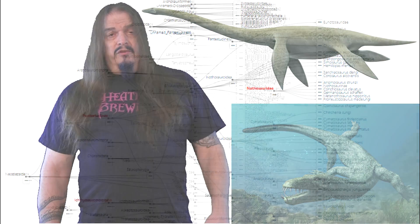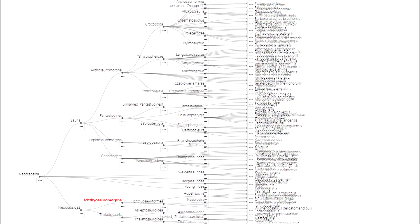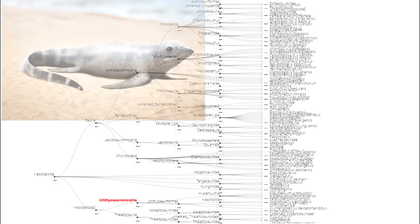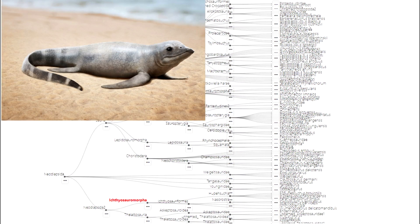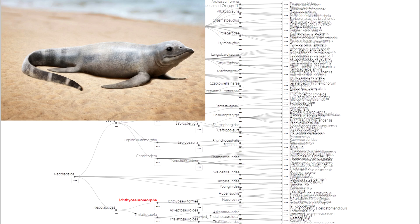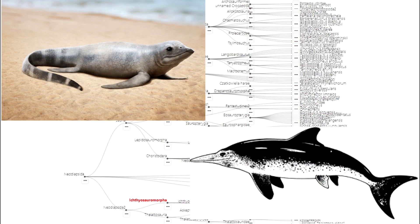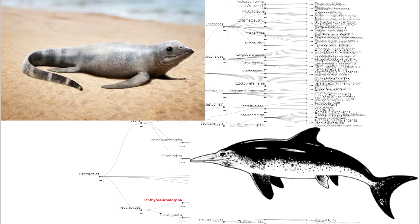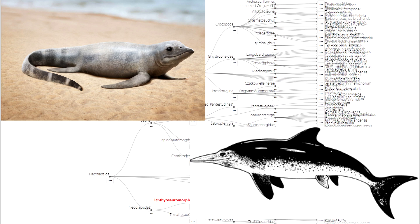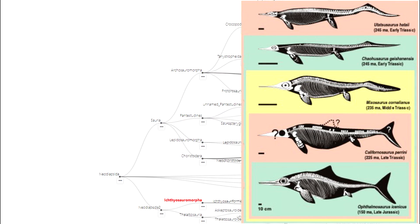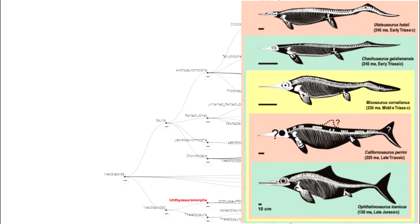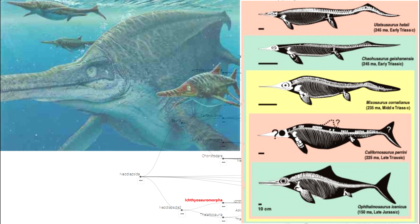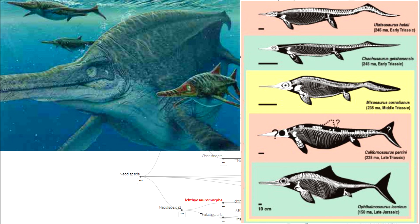We also see another transitional species in Cartorhynchus, the earliest ichthyosaur ever yet discovered. This little four-flippered reptile had flexible wrists, meaning it could hobble about on land like a seal. Descendant species, however, were more like dolphins — obligate swimmers with rigid wrists, unable to move around on land at all. Over time they developed a crook in their tails that turned into flukes, they eventually sported a dorsal fin too, and some of them grew to be enormous.